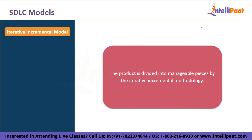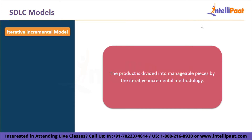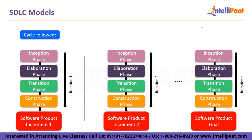Next, we will talk about the iterative incremental model. The product is divided into manageable pieces. A feature is chosen and put into practice during each iteration. Phases such as requirement, analysis, design, coding, and testing are completed throughout each iteration. After each iteration is finished, a product is confirmed and sent to the client for review and feedback. Customer feedback is incorporated in the following iteration. As a result, the product gains features as iterations progress, and the final build has all of the product's features.